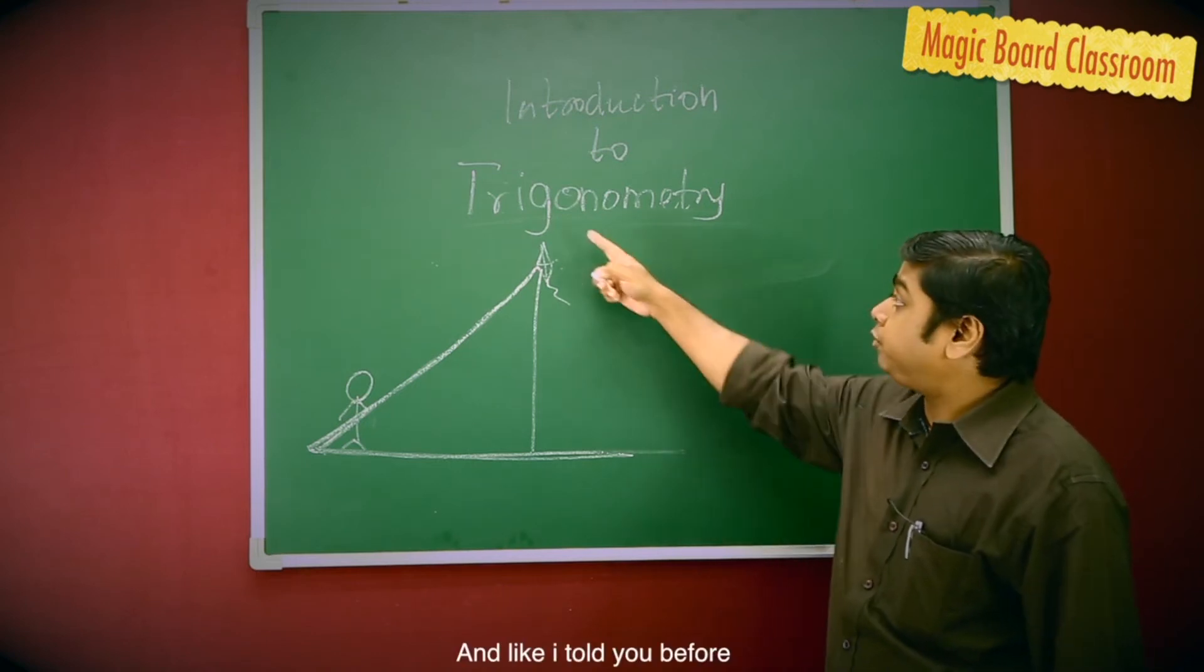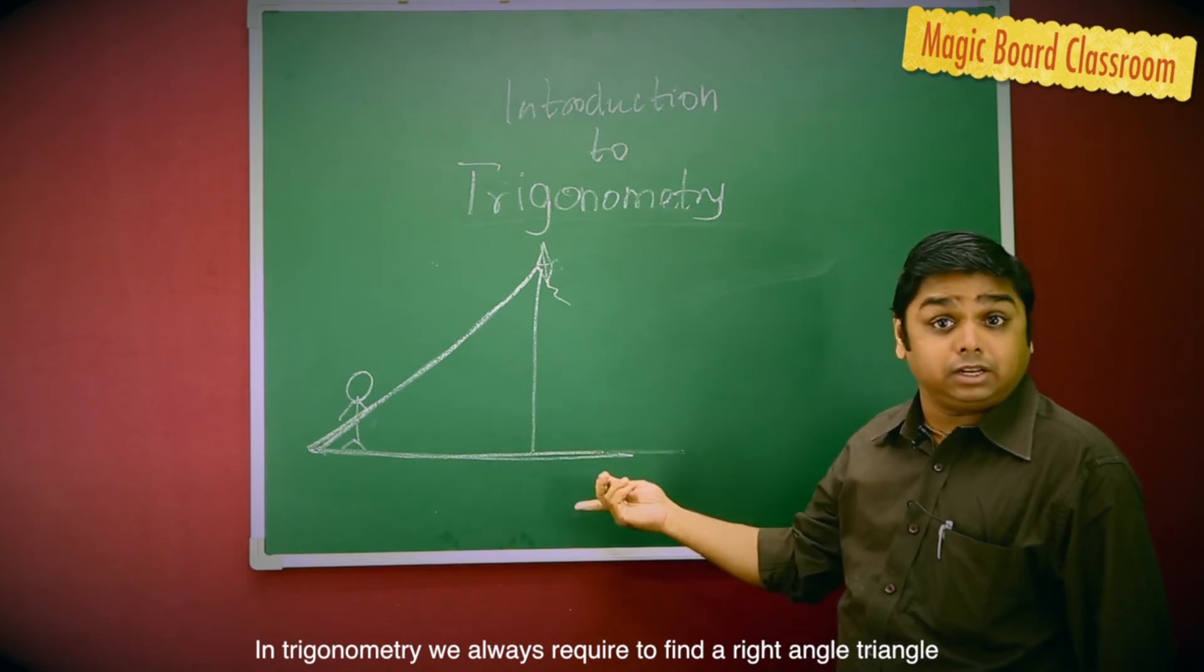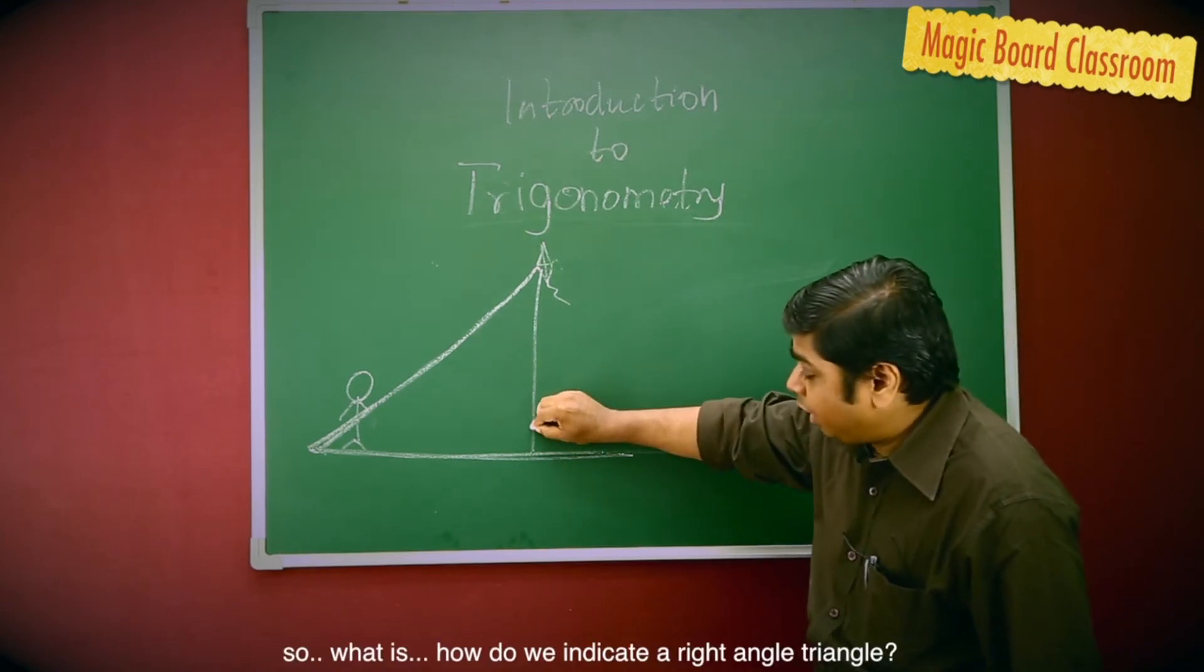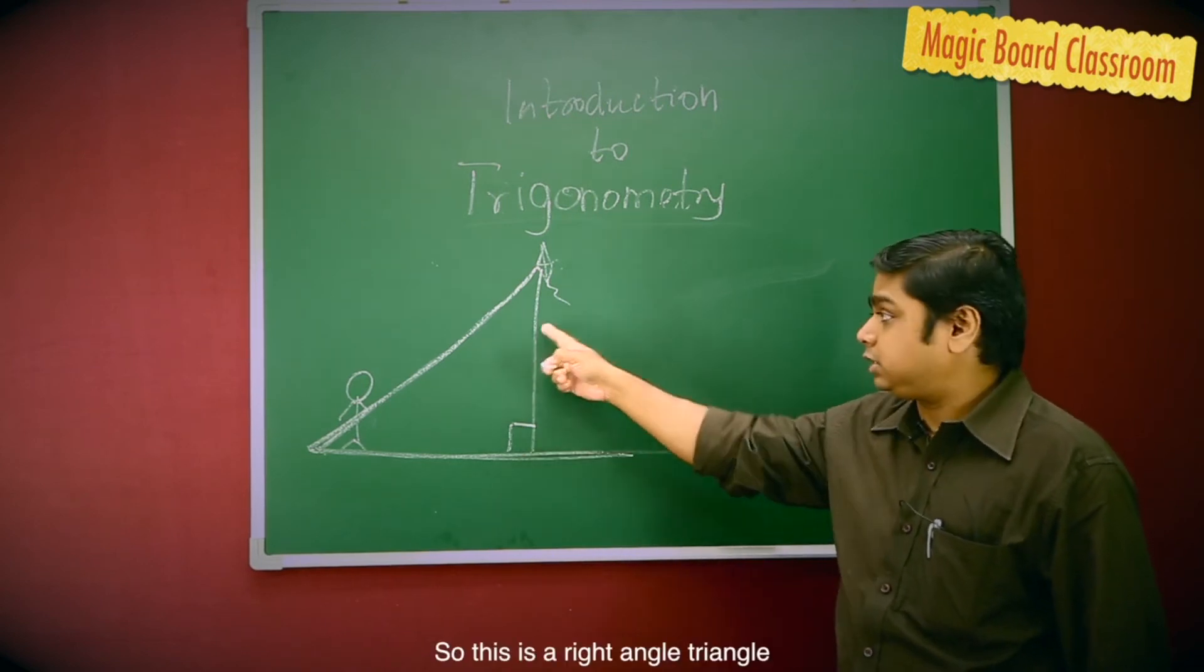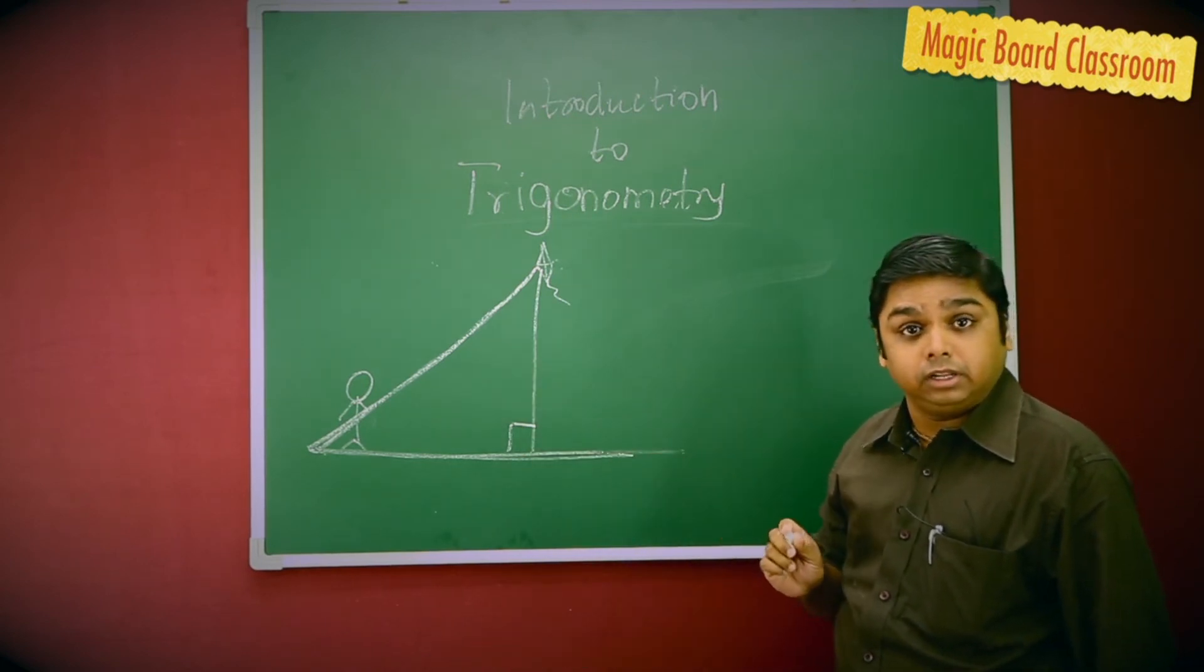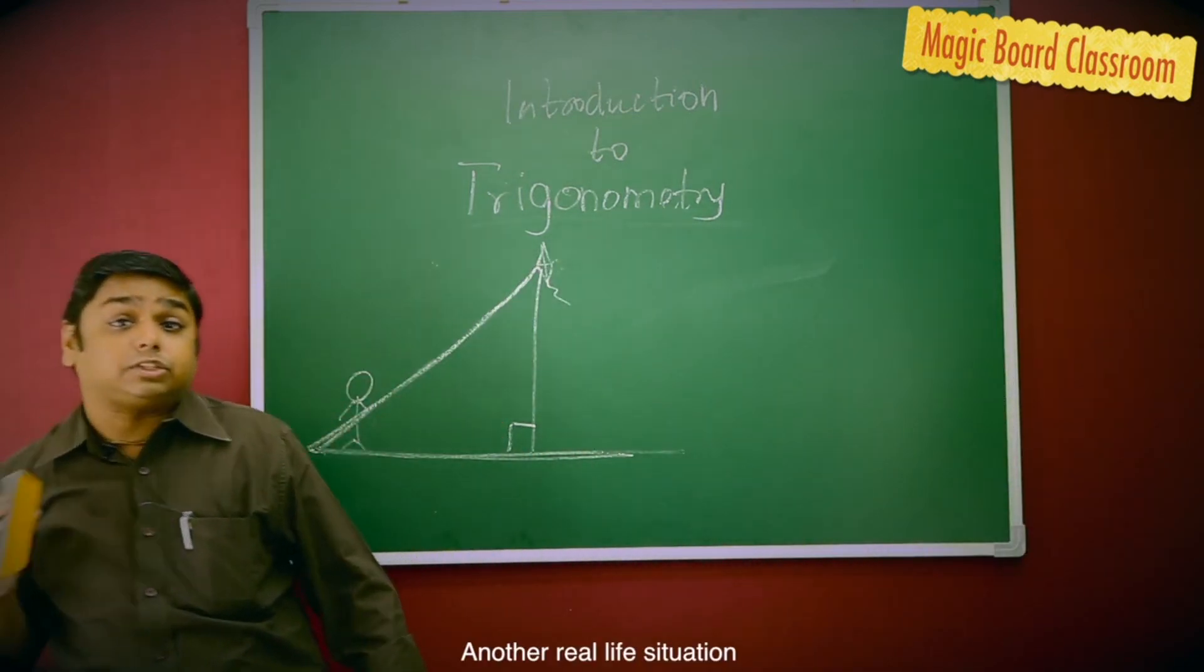And like I told you before, in Trigonometry, we always require to find a right-angled triangle. So, how do we indicate a right-angled triangle? By this square. So, this is a right-angled triangle. Let's study about another real-life situation.